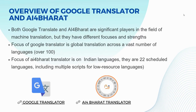Coming to the overview of Google Translator and AI4Bharat: Google Translate stands out as a global translation powerhouse, supporting over 100 languages, providing widespread linguistic coverage and facilitating communication on a global scale. On the other hand, AI4Bharat Translator is dedicated to the linguistic diversity of India, concentrating on the 22 scheduled languages, which encompass various scripts including those for low-resource languages, emphasizing local languages and their unique challenges.